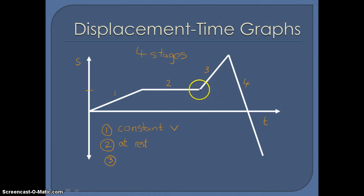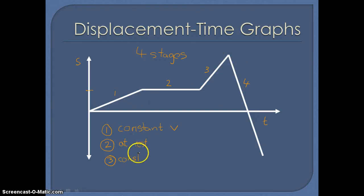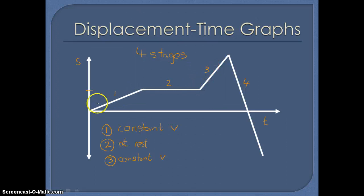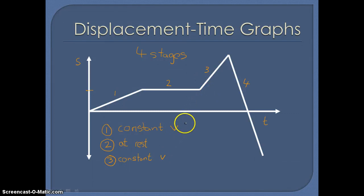Stage number three is actually very similar to stage one — as we move across to the right, the graph is gradually sloping upwards, so again we'd have a constant velocity. However, if we consider the differences between stage one and stage three: stage one has quite a shallow gradient, whereas stage three is steeper. This tells us about speed — for stage one the object travels with a slower speed, and for stage three the object travels with a faster speed.